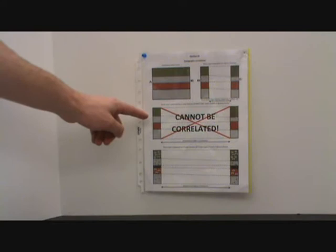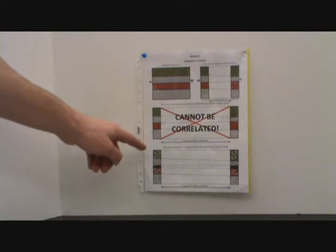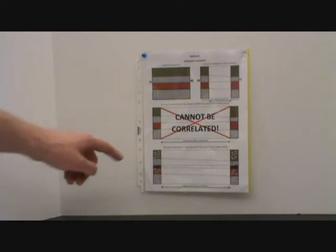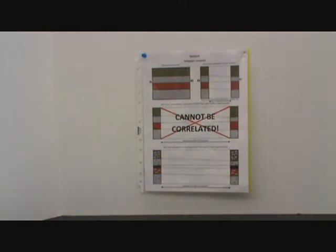In the third diagram, although the layers look similar, they cannot be correlated because they are separated over too long of a distance. In the fourth diagram, the layers can be correlated in spite of the long distance because the layers look similar and contain the same index fossils.